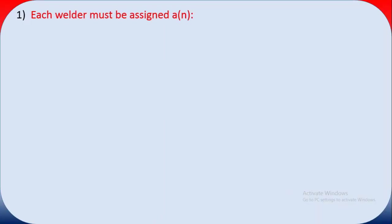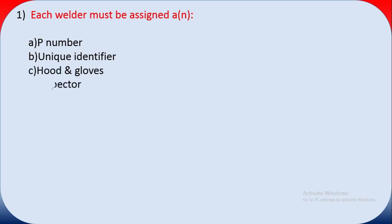Question one: each welder must be assigned a — option A is the P number, option B is a unique identifier, option C is the hood and gloves, and option D is the inspector. The welder doesn't need a P number, hood and gloves, or inspector assigned — but to identify the welder, we need a unique identifier. The answer is B.